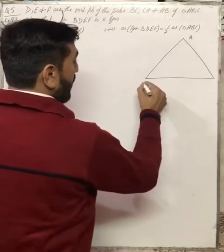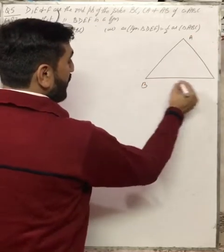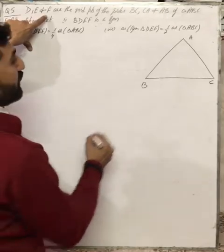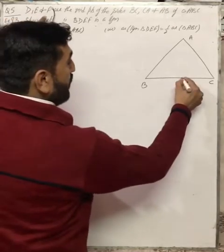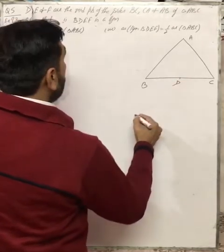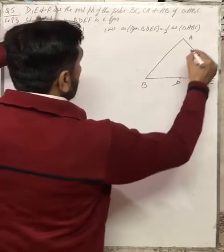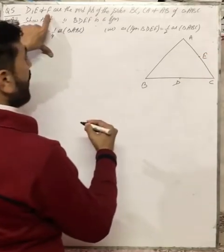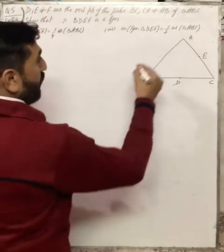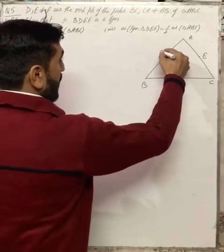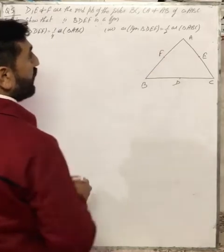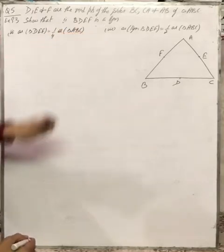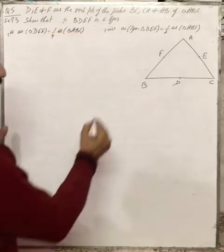This is triangle A, B and C. Now we are given that D, E and F are the midpoints: D is a midpoint of BC, E is a midpoint of CA, and F is a midpoint of AB. Three midpoints are given. We need to show that B, D, E, F is a parallelogram.